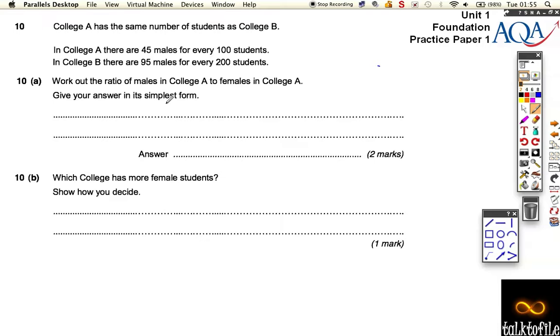For College A we want to work out the ratio of males to females. So it's a ratio, it's male to female. Okay, so there's 45 males and there must be, for every 100 students, that must be 55 females then. Okay, but it says give it in its simplest form.